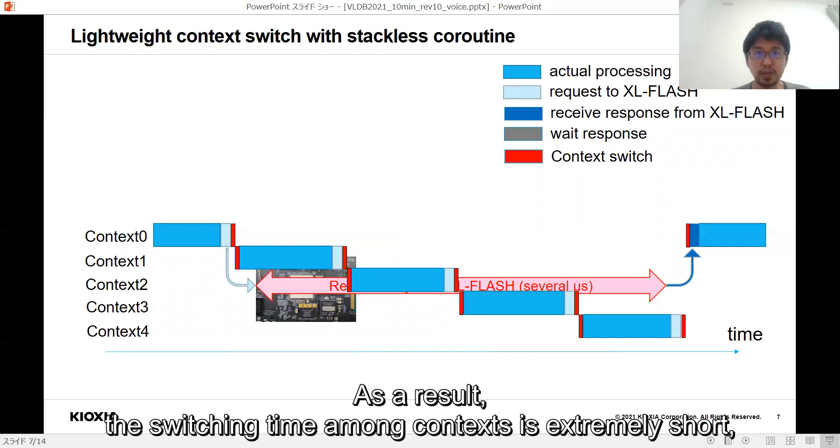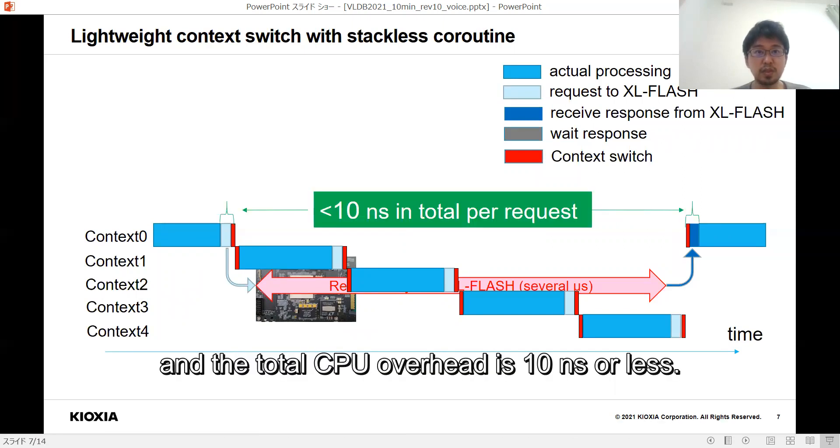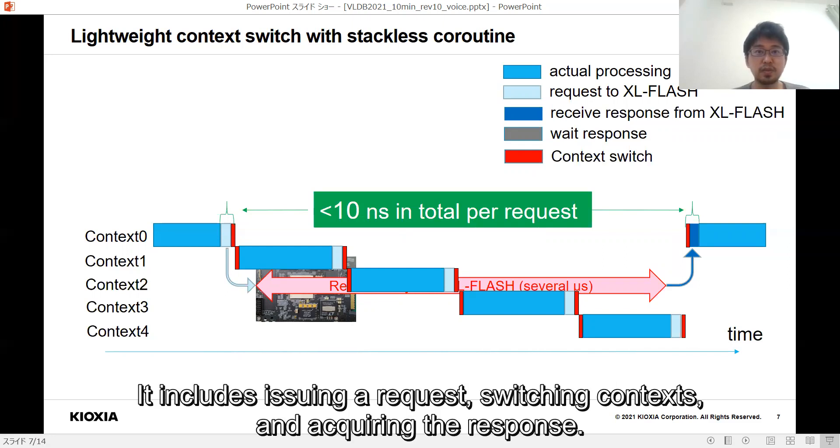As a result, the switching time among contexts is extremely short and the total CPU overhead is 10 nanoseconds or less. It includes issuing a request, switching contexts, and acquiring the response.